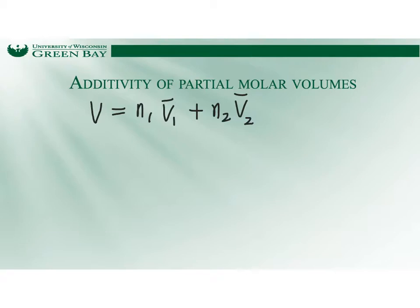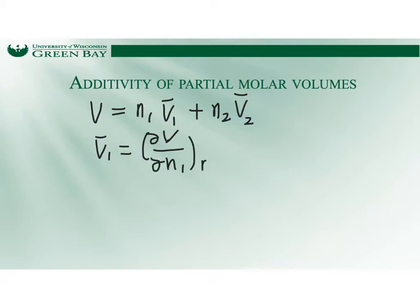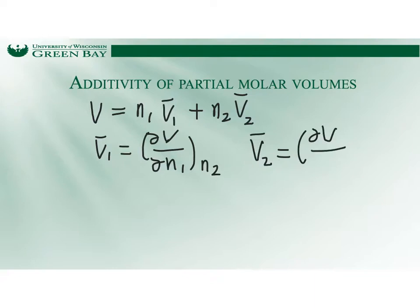So what are V1-bar and V2-bar? V1-bar equals the partial differentiation of V with respect to N1, holding N2 constant. Similarly, V2-bar equals the partial differentiation of V with respect to N2, holding N1 constant.